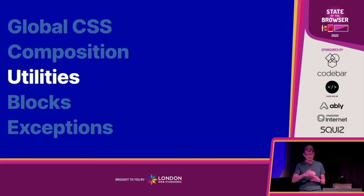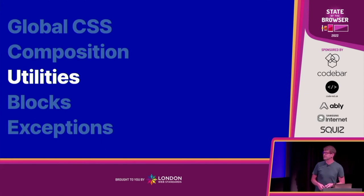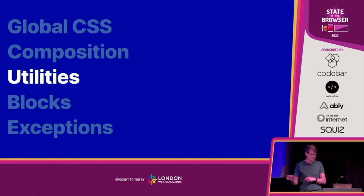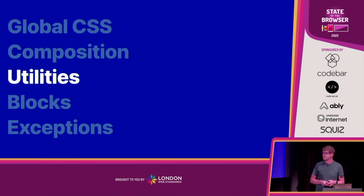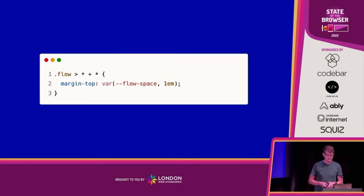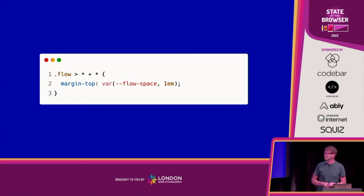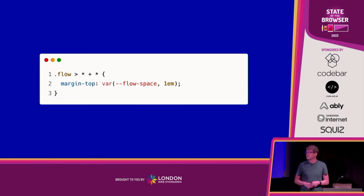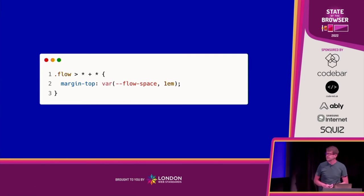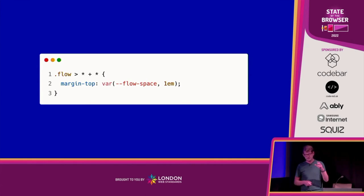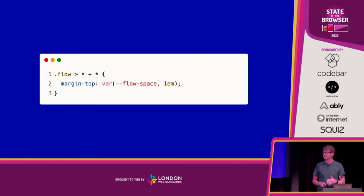We can start coloring it in because we've built our foundations: semantic HTML, a reset, some global CSS. Now for utilities. Tailwind is doing the blunt-force utilities — background colors, text colors, whatever. The utilities I want to look at are the ones that do one job really well. The first one is my favorite: three lines of CSS. This adds space only to sibling elements in flow context using the lobotomized owl selector, coined by my friend Heydon Pickering. The key is the child combinator, so instead of recursively selecting siblings it only selects one level from where you're applying the utility.